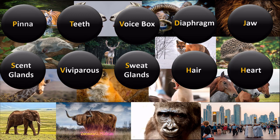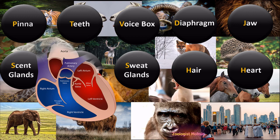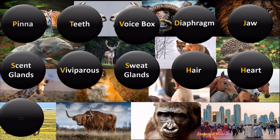The next feature is the heart. The mammalian heart has four chambers, and these four chambers are totally separated from each other, meaning oxygenated and deoxygenated blood are not mixed — unlike what we see in reptiles.